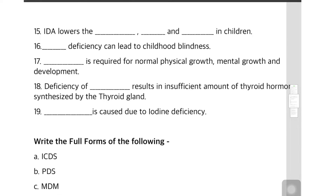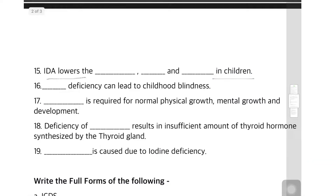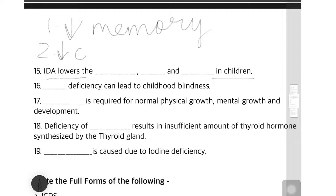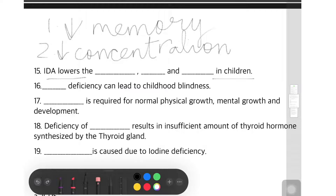Question 15: IDA lowers the dash dash dash in children. Iron Deficiency Anemia does three things in children: first, it decreases memory — whatever the child learns, they will forget very fast; second, it decreases concentration; and third, it reduces attention span, meaning the person cannot pay attention on anything for a longer period of time.